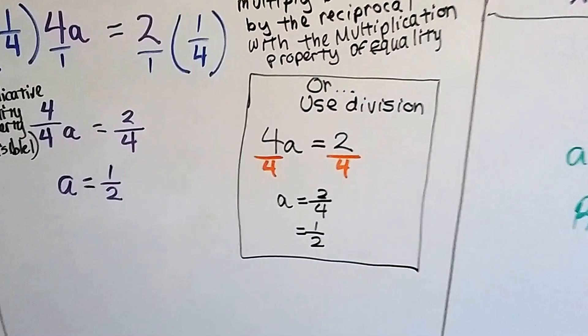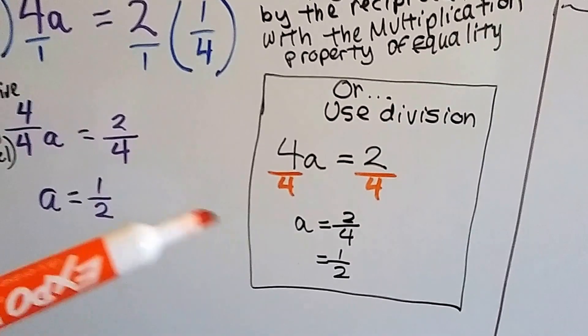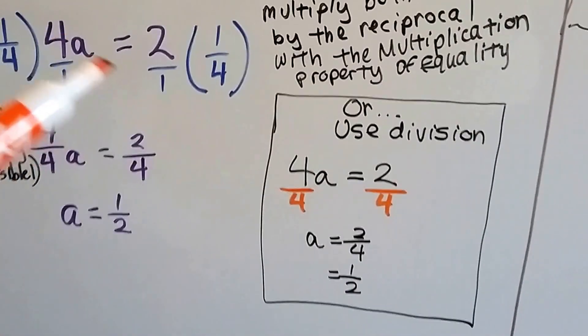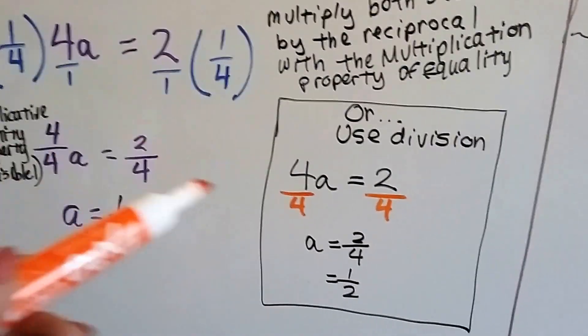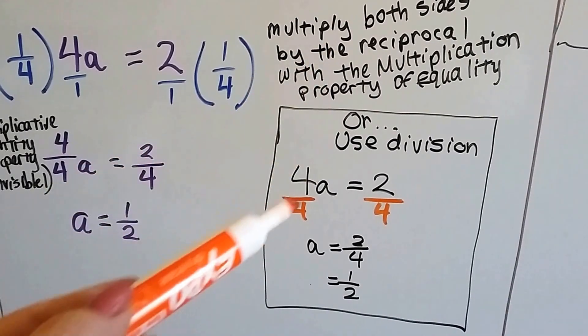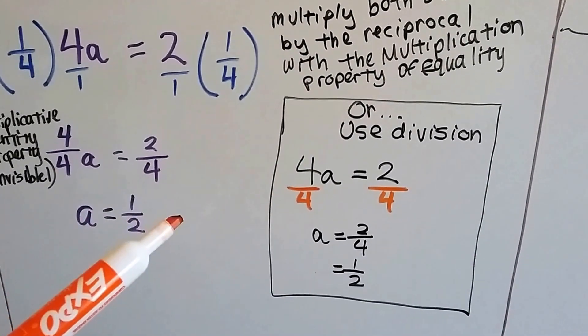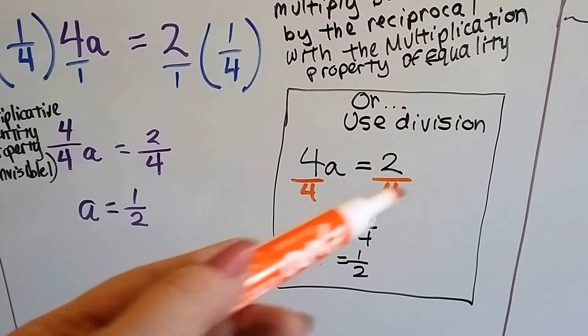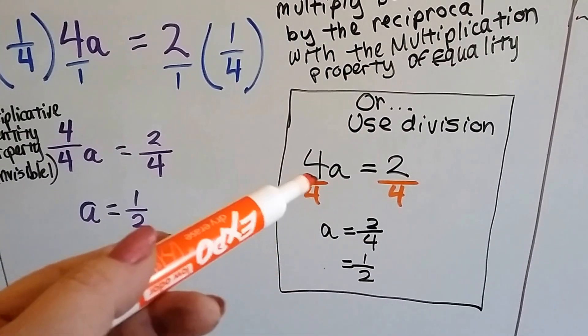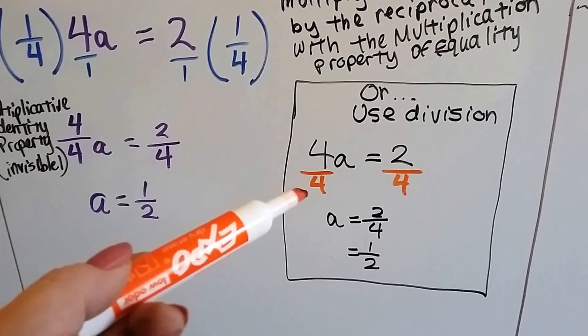Now, if you also remember, we can use division if we know what we're doing. So if we're at this part where we have 4a equals 2, we don't necessarily need to multiply it by the reciprocal. If we really know what we're doing, we can just divide both sides by the coefficient 4 instead of the reciprocal of 4.